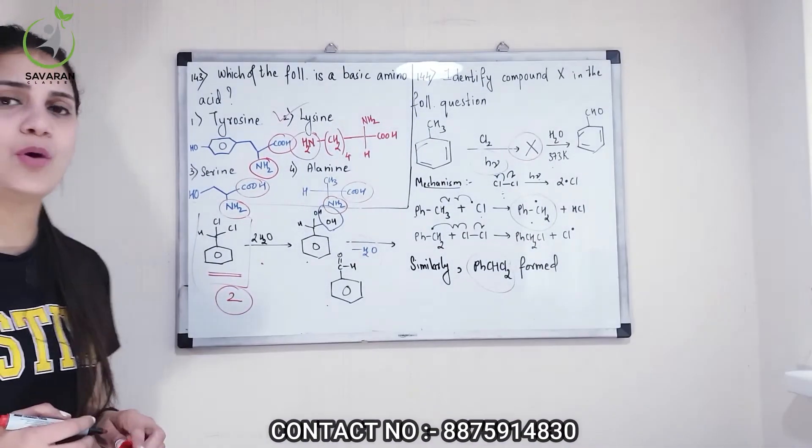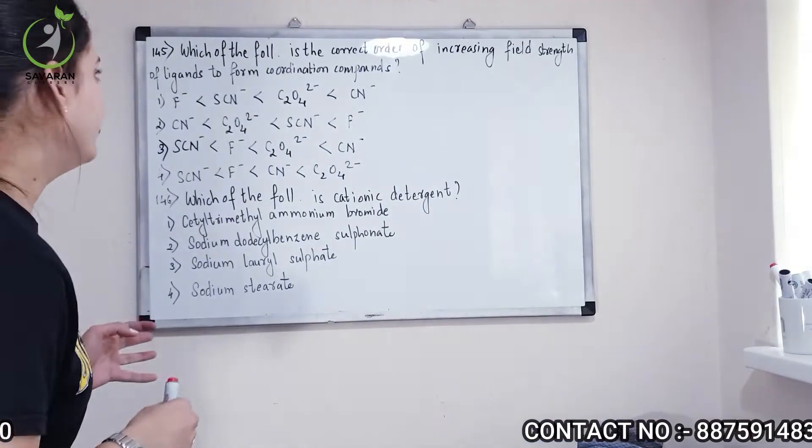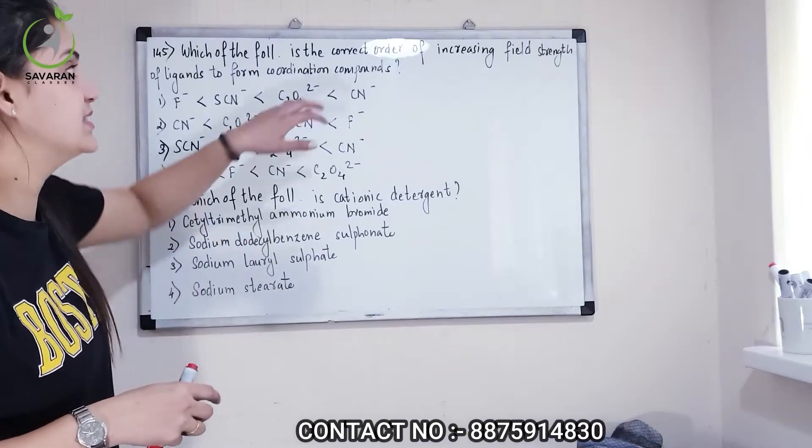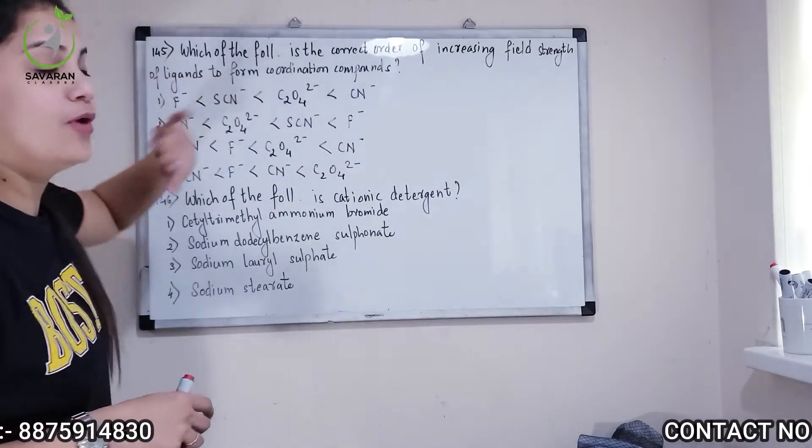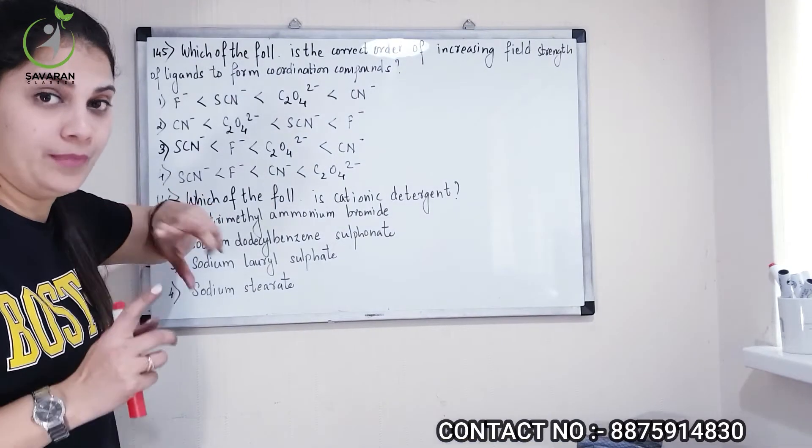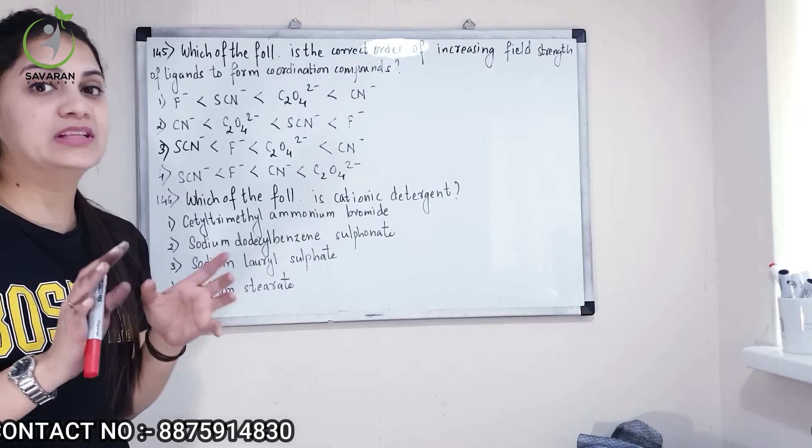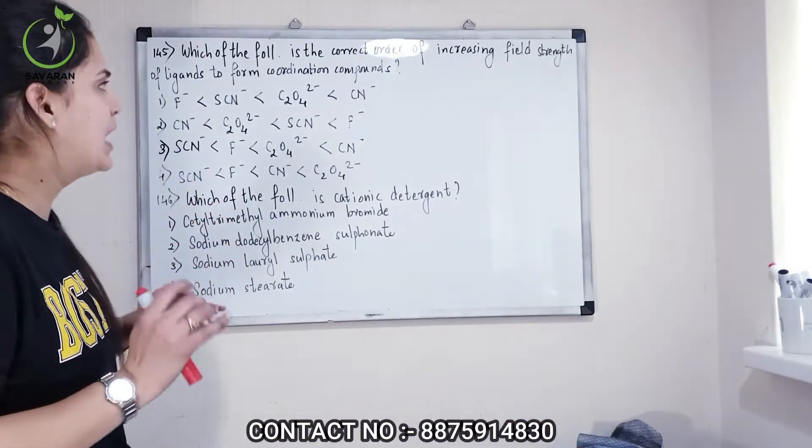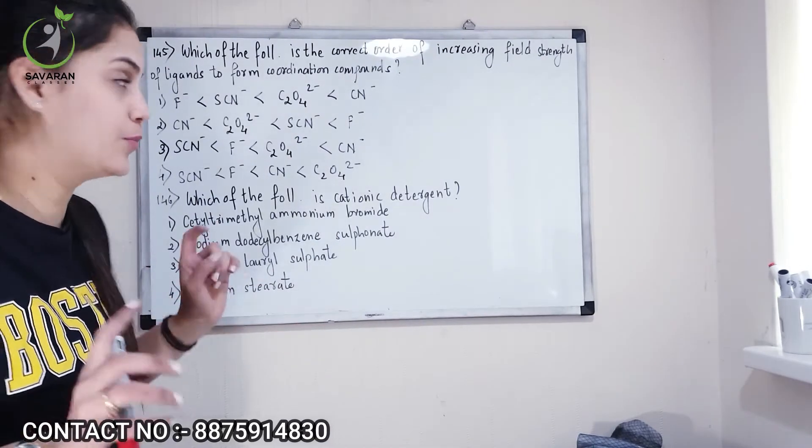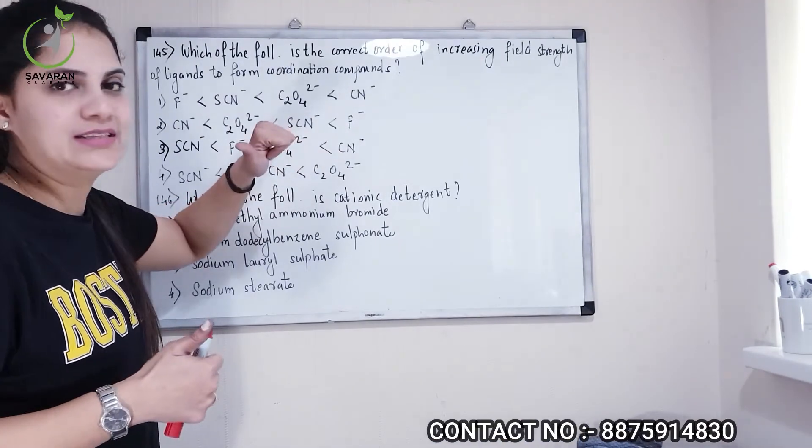So bachyo question number 145 dekh lete hai. 145 me emko kya puchha hai - which of the following is the correct order of increasing field strength of ligands to form coordination compounds. Now you remember that whenever this type of question is coming it means it is talking about the spectrochemical series. So if it is a spectrochemical series then you should have a weak field and strong field ligands. Now here maximum you will not have a problem, the problem is only one thing that is SCN-.